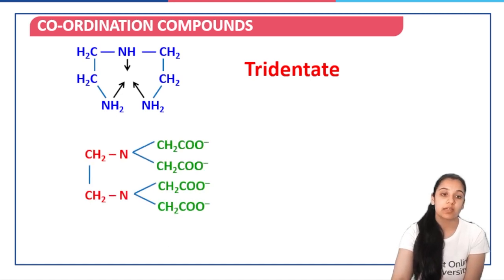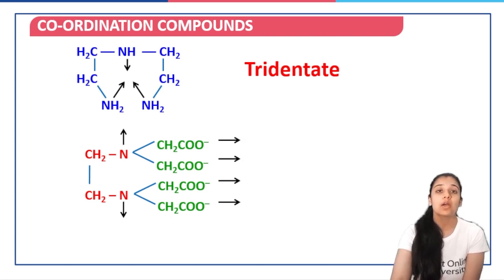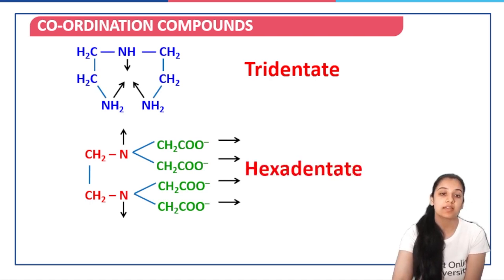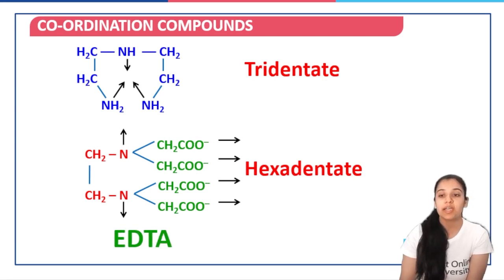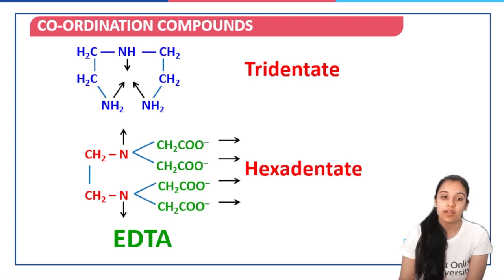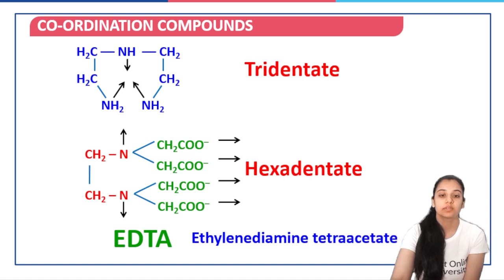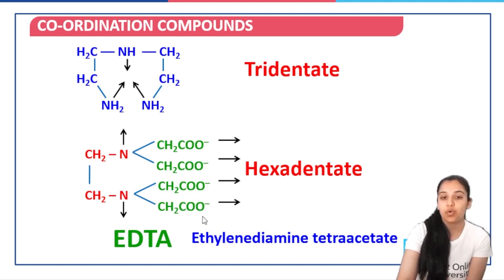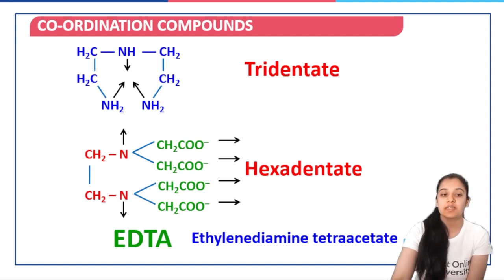If we look at another ligand, it has four oxygen atoms and two nitrogen atoms that are capable of forming coordinate bonds. So that is 4 plus 2 equals 6 — denticity is 6, meaning it is a hexadentate ligand. This is the most important ligand in our coordination compounds chapter: EDTA, ethylenediamine tetraacetic acid. Since H is removed from the acetic acid groups (CH3COOH), it becomes acetate, giving us ethylenediamine tetraacetate.